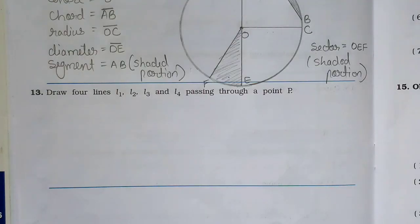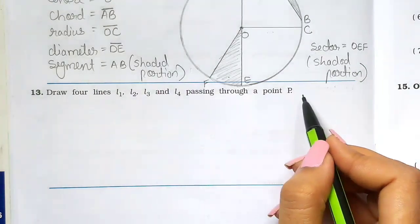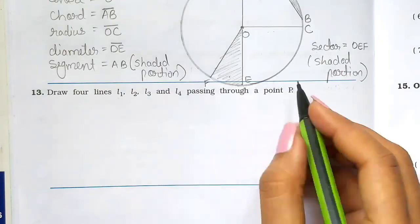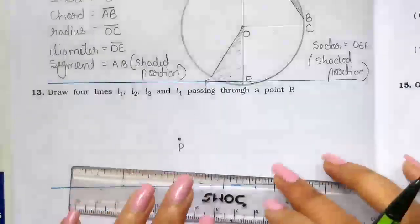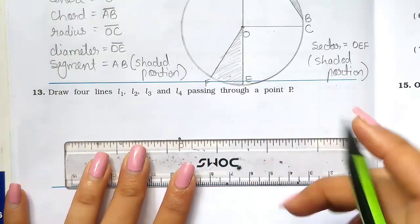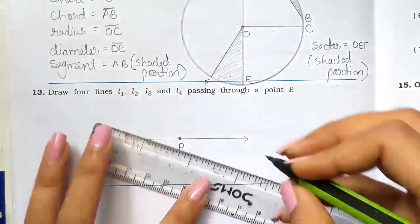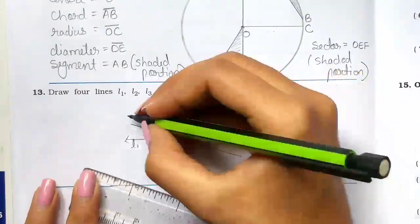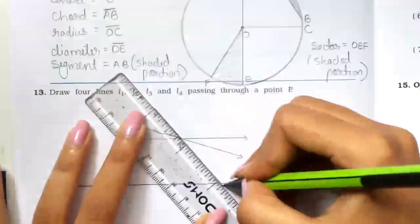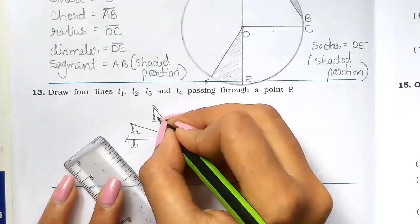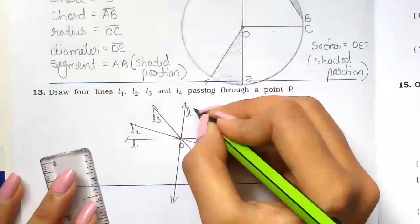Question number 13: Draw four lines L1, L2, L3 and L4 passing through a point P. All four lines must pass through the single point P. So first we mark point P. Then L1 passes through P, L2 passes through P, L3 passes through P, and L4 passes through P.